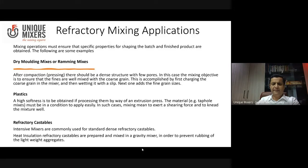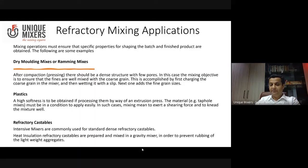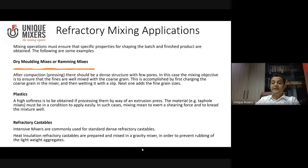For dry molding mixes or ramming mixes, after compacting there should be a dense structure with few pores. The mixing objective is to ensure that all fines are well mixed with the coarse grain — accomplished by first charging the coarse grain in the mixer, then wetting it with the slip, and then adding the fine grains. For plastics, a high softness is obtained by processing via an extrusion process — for example, in tap holes where you should be able to apply them easily. In such cases, mixing means exerting a shearing force to knead the mixture well. The tap hole clay mixer we have supplied is essentially a sigma mixer or sigma kneader where shear force is applied to ensure kneading.